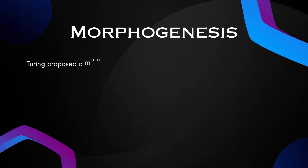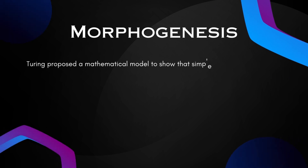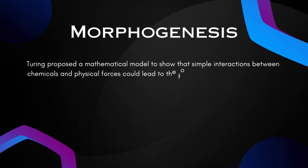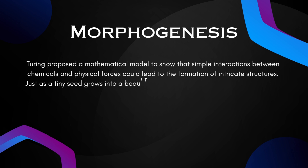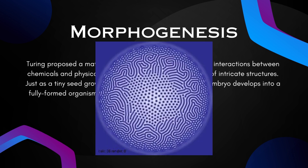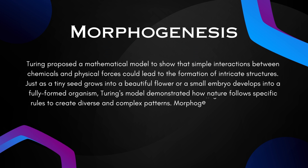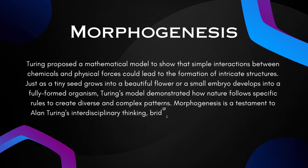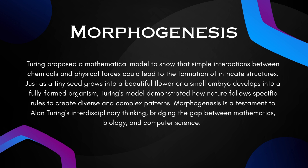Morphogenesis: Turing proposed a mathematical model to show that simple interactions between chemicals and physical forces could lead to the formation of intricate structures. Just as a tiny seed grows into a beautiful flower or a small embryo develops into a fully formed organism, Turing's model demonstrated how nature follows specific rules to create diverse and complex patterns. Morphogenesis is a testament to Alan Turing's interdisciplinary thinking, bridging the gap between mathematics, biology, and computer science.